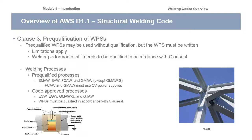For welding processes, if you're going to use the pre-qualified route, you can only use shielded metal arc, submerged arc, flux core, and gas metal arc. For gas metal arc, you can't use short-circuiting — that's out. Anything below about 20 volts you can't use. You can use short-circuiting in D1.1, but you have to qualify it because you get incomplete fusion and it doesn't tie in well.